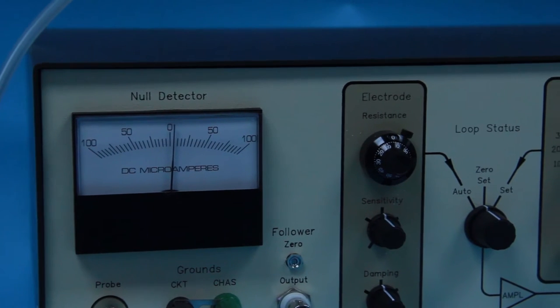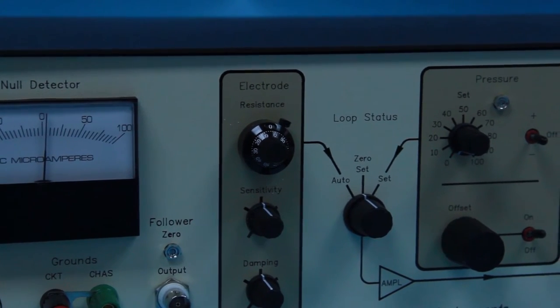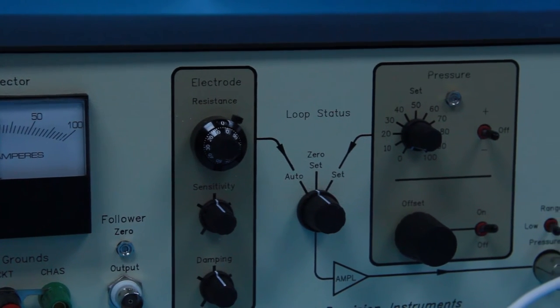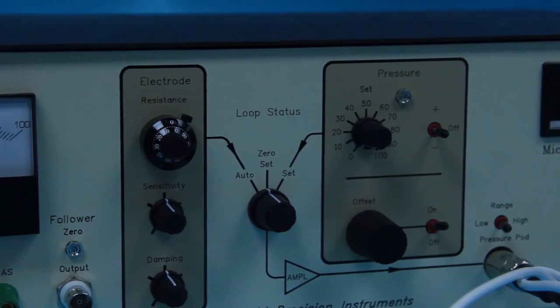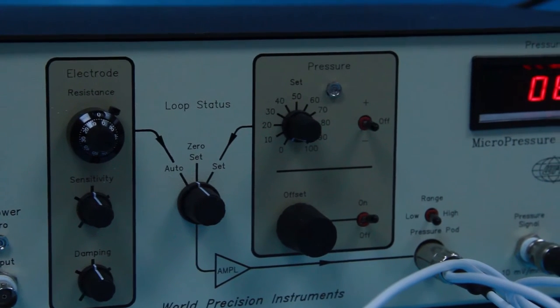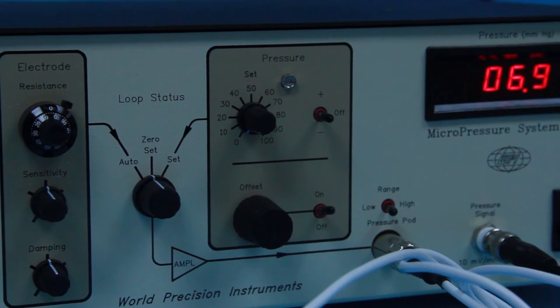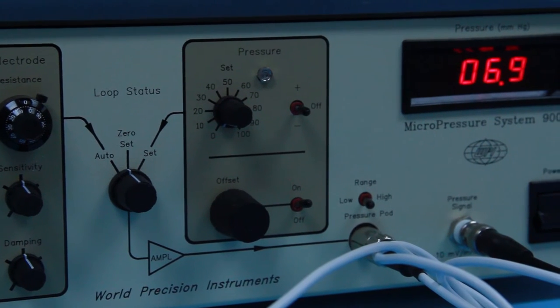The unique set pressure mode lets you preset the internal pressure of the microelectrode. Select a positive pressure for flushing the tip or a negative pressure for pulling solution into the tip. The 900A includes a built-in alarm sound to indicate maximum pressure. The alarm also sounds when the tip is blocked or electrical continuity is broken.